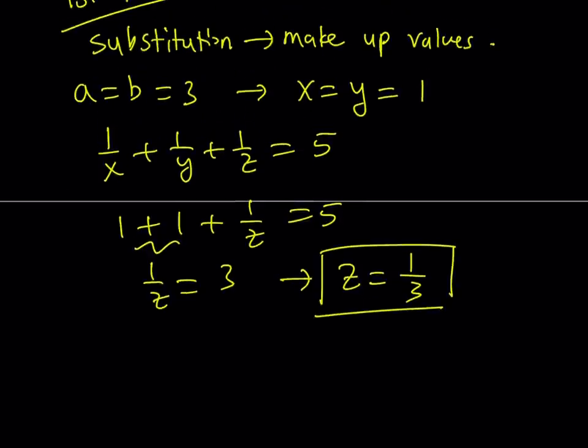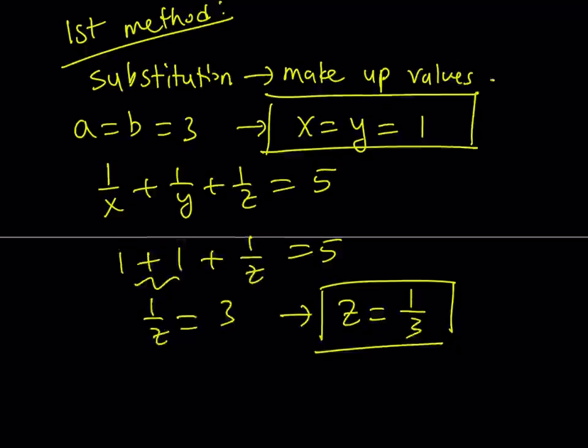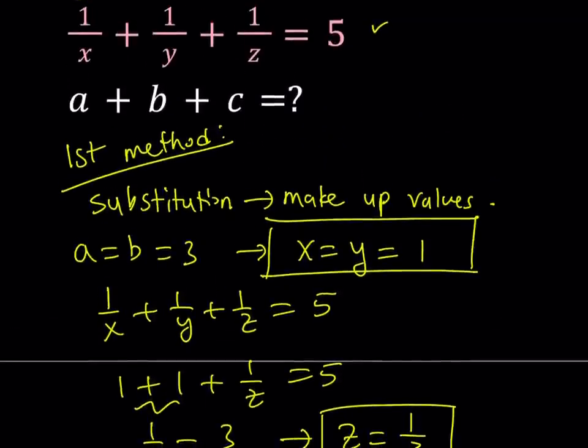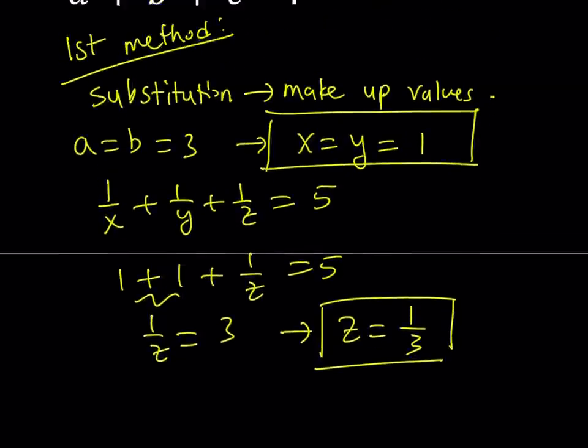So I got the value of X and Y because we just made it up. And from that, we got the Z value. Now, would it matter if you pick different values? We can test it out. Like, you can pick X equals, you know, A equals B equals one. That would give you three and three for X and Y. You can plug it in and then find the Z and then see if that makes a difference. And you'll notice that it doesn't. Okay, great.